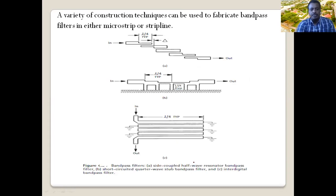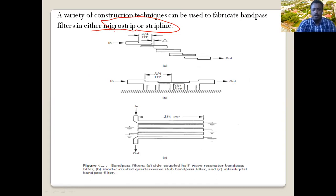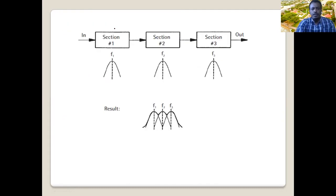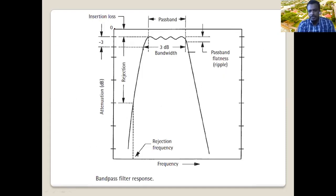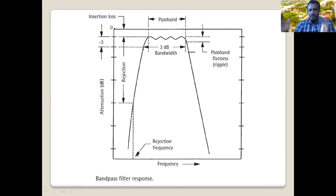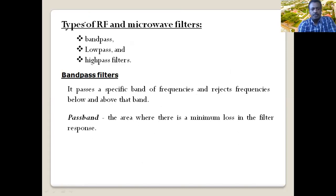Microwave filters can be constructed from either microstrip or striplines. For example, this is a band pass filter constructed from striplines, and here is a low pass filter with a cutoff frequency of 2 GHz — this filter passes all frequencies up to 2 GHz but rejects signals above 2 GHz. We design microwave filters from distributed parameter components rather than traditional lumped parameter components.